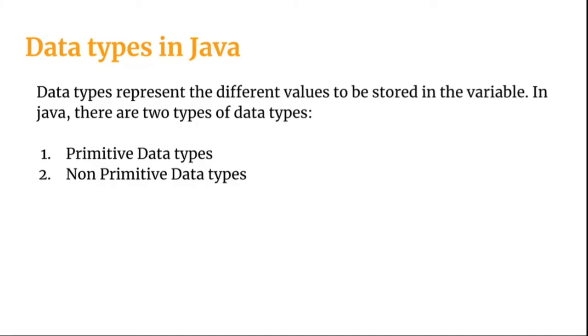Data types represent the different values to be stored in the variable. In Java, there are two kinds of data types. First one is called primitive data types and the second one is called non-primitive data types.